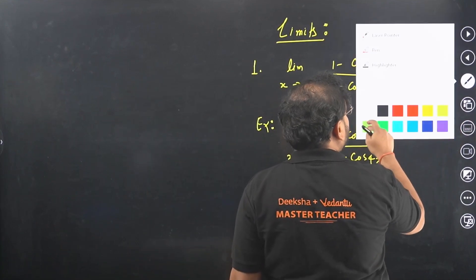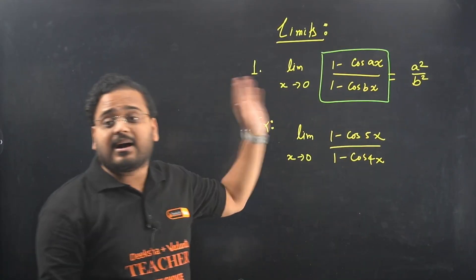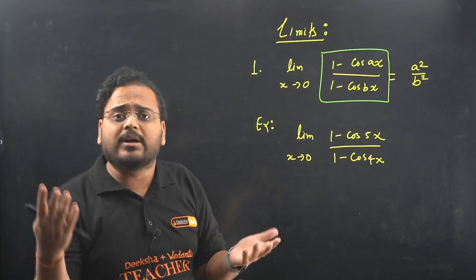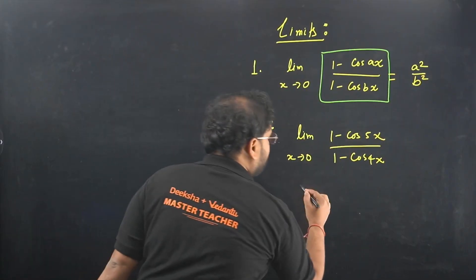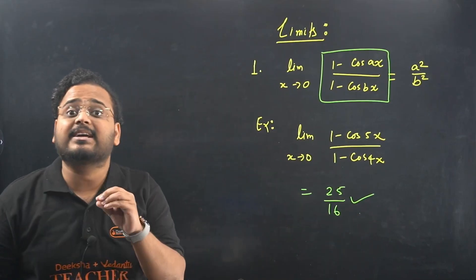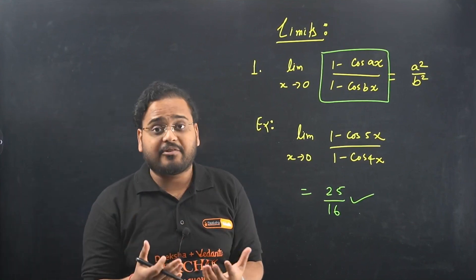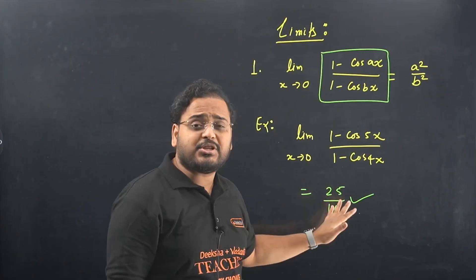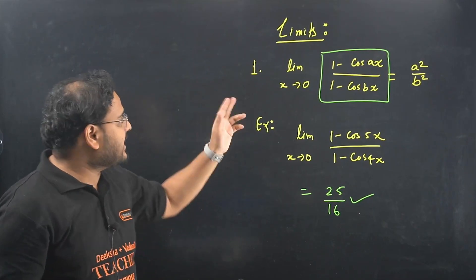Trick 1: When you have the limit of (1 - cos(ax)) / (1 - cos(bx)), the direct answer is a²/b². We can solve it using L'Hôpital's rule, but simply remember this formula. For example, if a = 5 and b = 4, the answer is 25/16. With tricks you must remember the formula, but it is worth it — the question is solved in under 10 seconds.